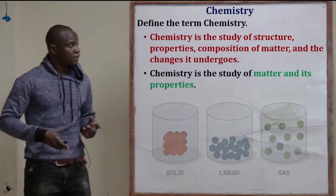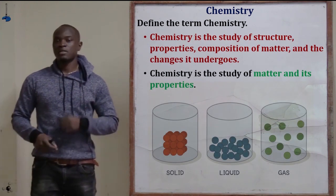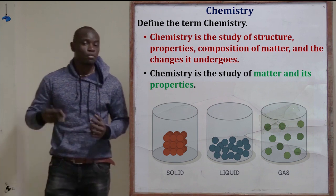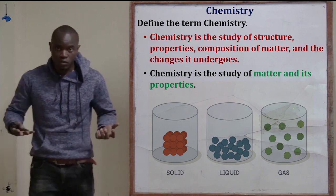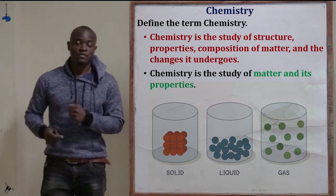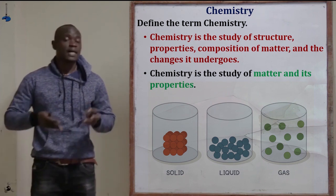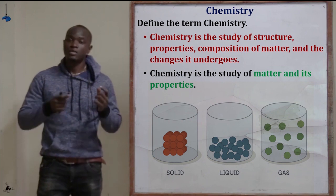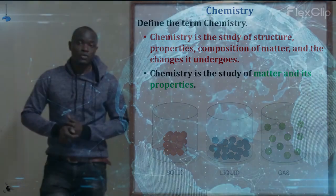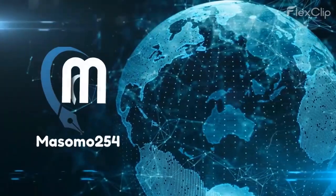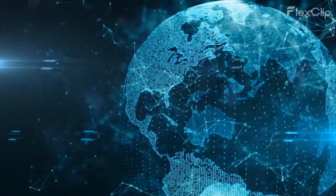To summarize, the full definition of chemistry is that chemistry is the study of structure, properties, and composition of matter and the changes that matter undergoes. The shorter definition is that chemistry is the study of matter and its properties, which includes solids, liquids, and gases.